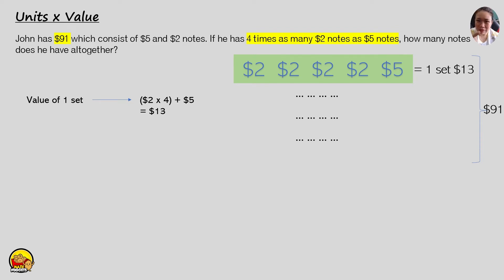So meaning he'll have 13, 13, 13, 13, and everything just adds up to $91. So the next thing we need to find out is how many sets are there?